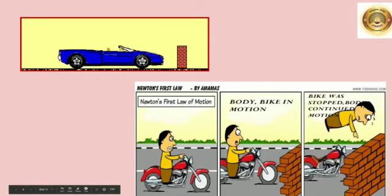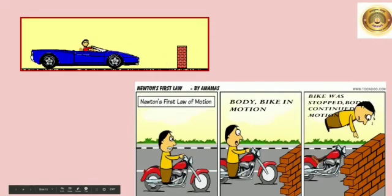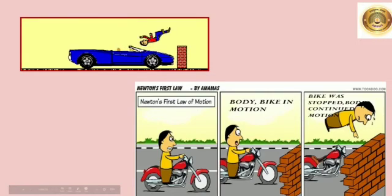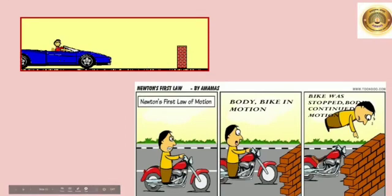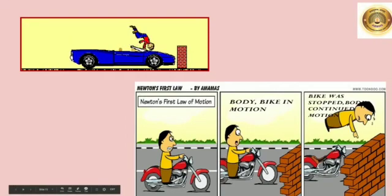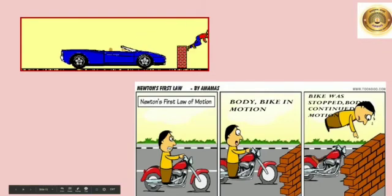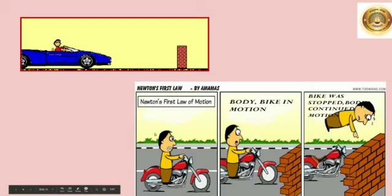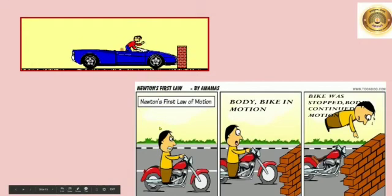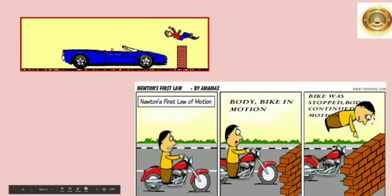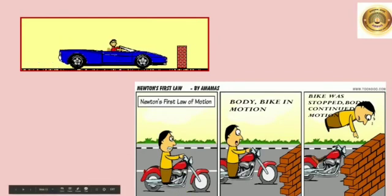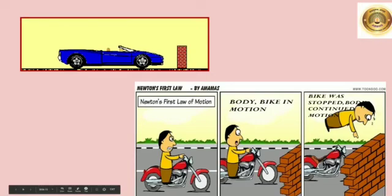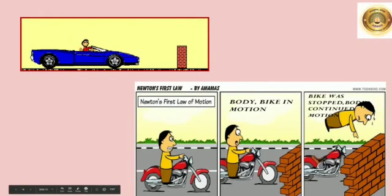Inertia of motion explains why passengers fall forward when a fast moving bus suddenly stops. In this case, the lower part of the body comes to rest as soon as the bus stops, but the upper part of the body continues to move forward due to inertia of motion. When the vehicles are moving, the body is also moving along with the vehicle. But when the vehicle stops suddenly, the person is thrown out of the vehicle because the body is still in motion.